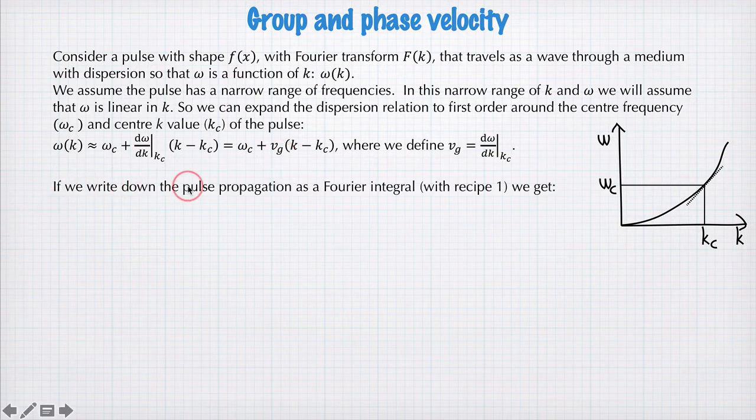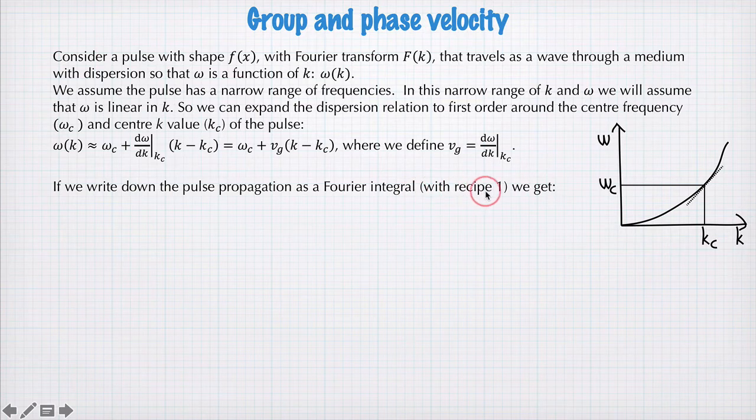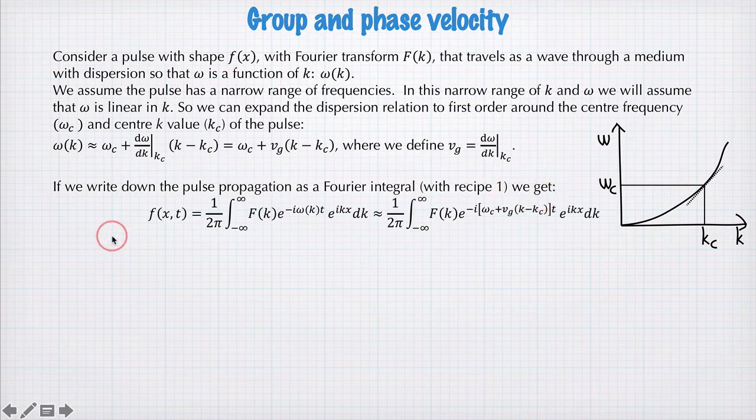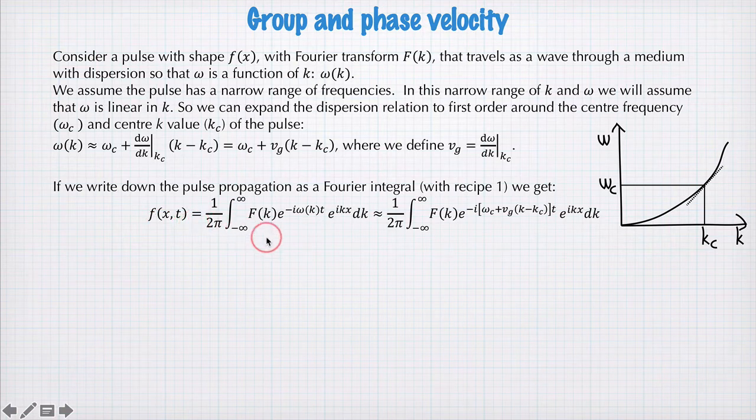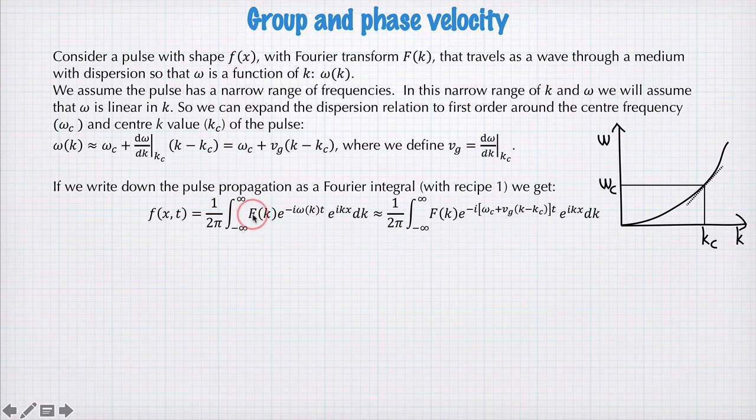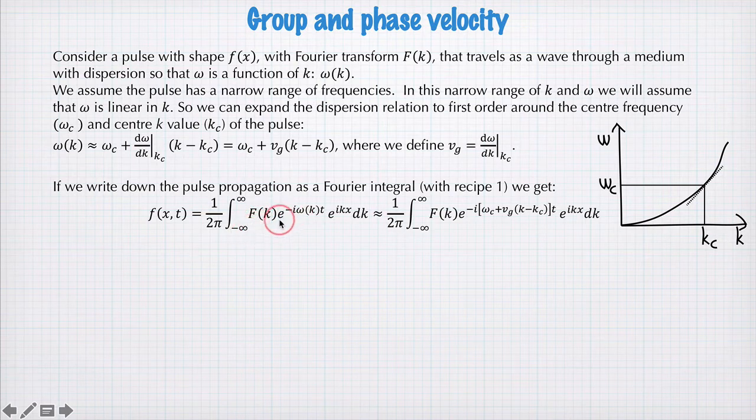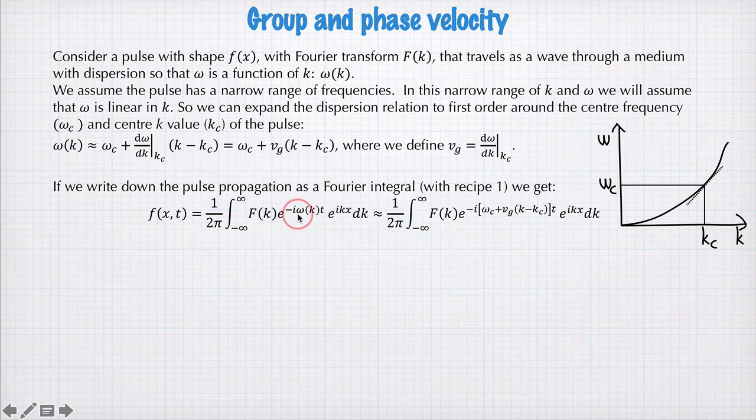Now if we write down the pulse propagation as a Fourier integral using recipe one, we get the following. That f of x and t is equal to this integral here, so this is the inverse Fourier transform, where we're integrating over the function capital F of k. So this is the Fourier components in our wave. We're rotating each Fourier component in complex space using this complex exponential here, and the speed of the rotation depends on omega. Omega depends on k.